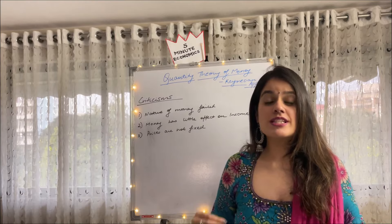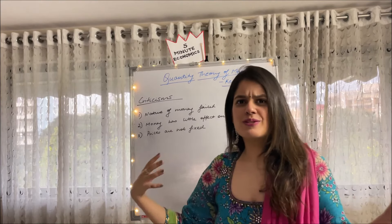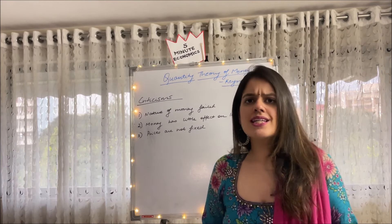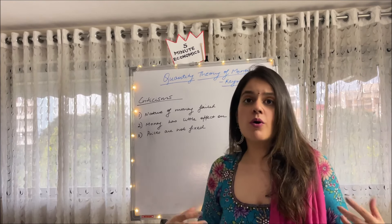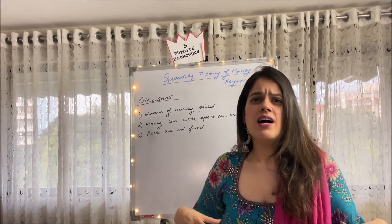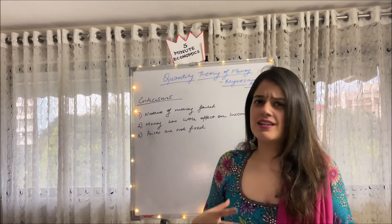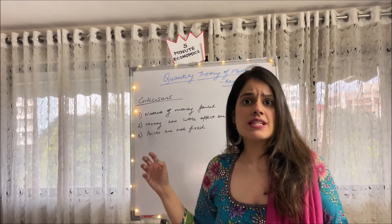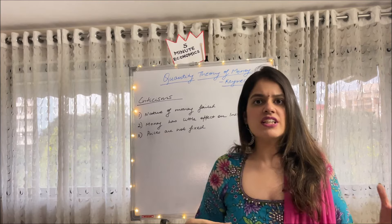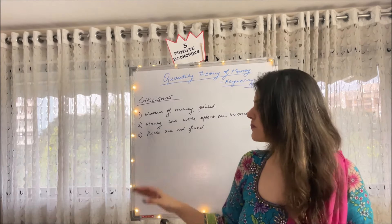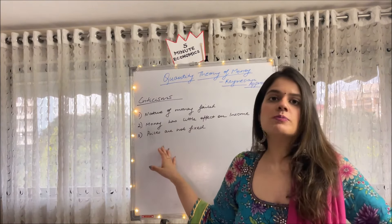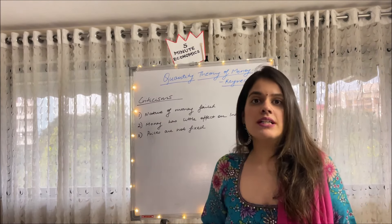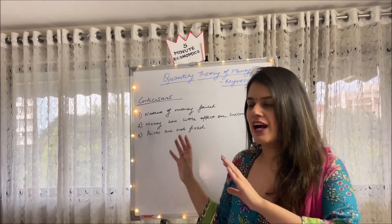Coming to the criticisms of this theory, which led to yet another theory. First, the nature of money was failed to be captured because Keynes thought money could only be exchanged for bonds, but that is not true — money can be exchanged for assets, securities, and other things as well. Second, Keynes showed money has little effect on income; however, Friedman said that money definitely has a very visible effect on national income. Third, Keynes assumed prices to be fixed, which was also criticized. These criticisms will be clearer when you study the next theory.